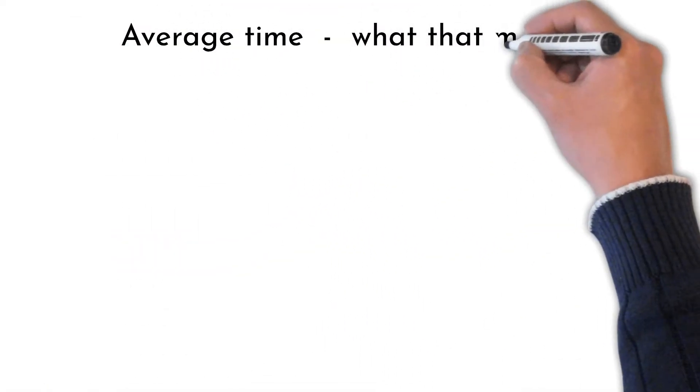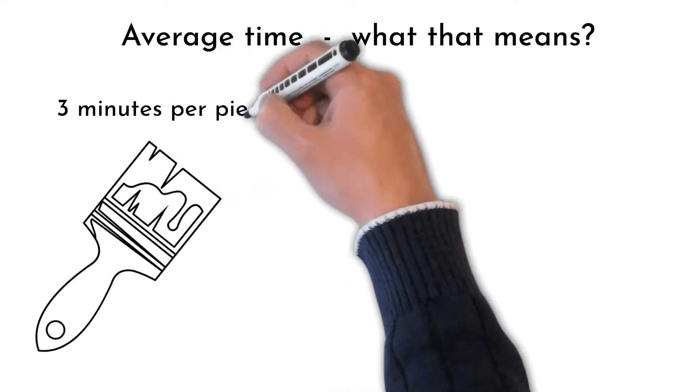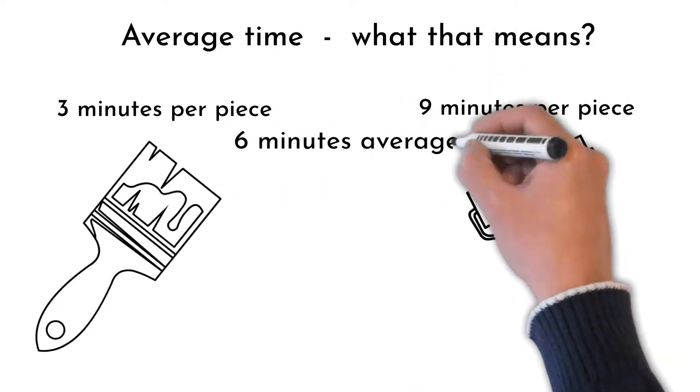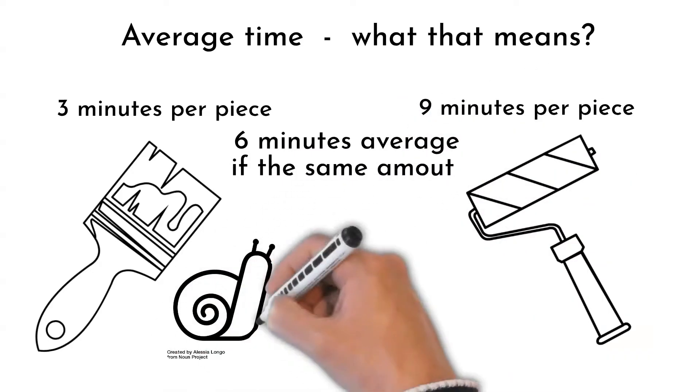Now what I mean by average time: if one product type takes three minutes to produce, another nine minutes, and production amount is the same, average cycle time is six minutes. Final cycle time is defined by the slowest process called bottleneck.